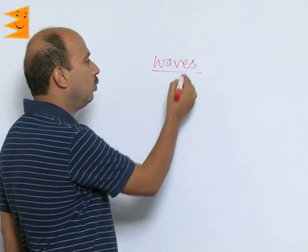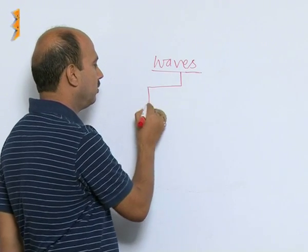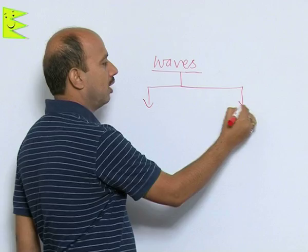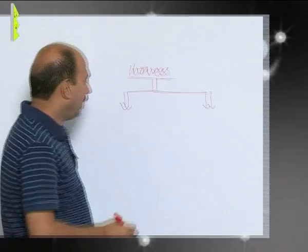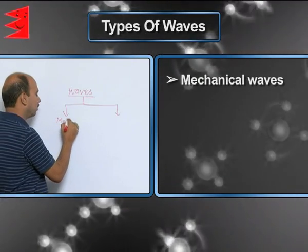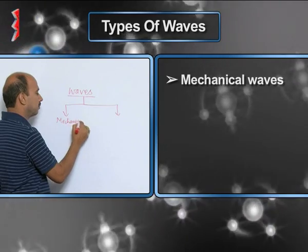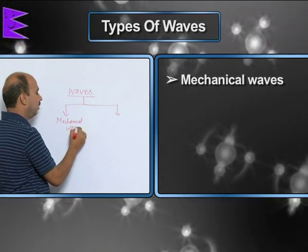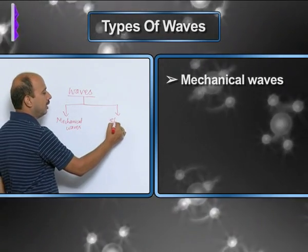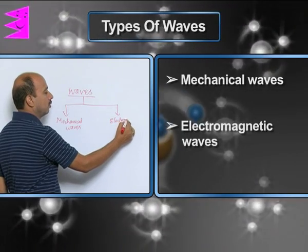There are two types of waves: one is mechanical waves and the other is electromagnetic waves.